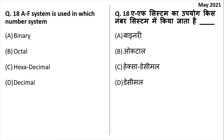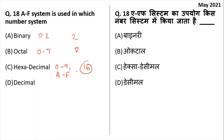Which number system uses A and F? Binary number system has base 2 with only zeros and ones. Octal has base 8 with numbers 0 to 7. Hexadecimal has base 16, using numbers 0 to 9 and letters A to F — giving 10 numerals and 6 alphabets totaling 16. Decimal is base 10 with numbers 0 to 9. The number system that has A through F is hexadecimal — option C.